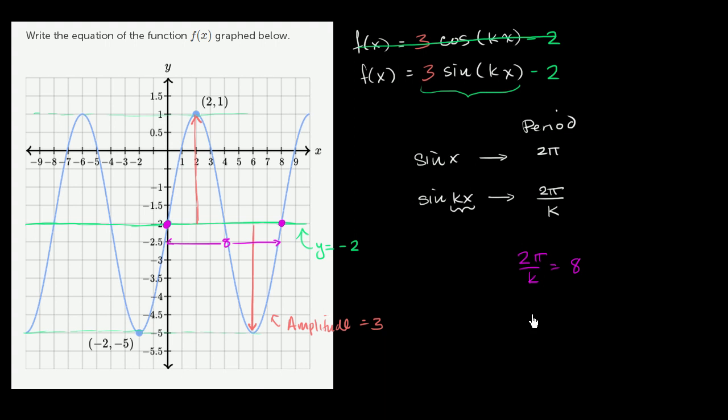Well, we could take the reciprocal of both sides. We get k over 2π is equal to 1 over 8. Multiply both sides by 2π.